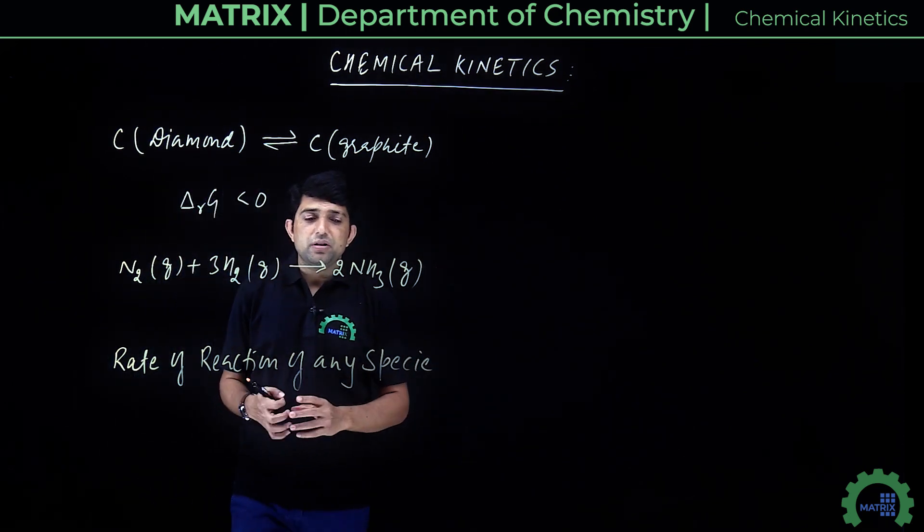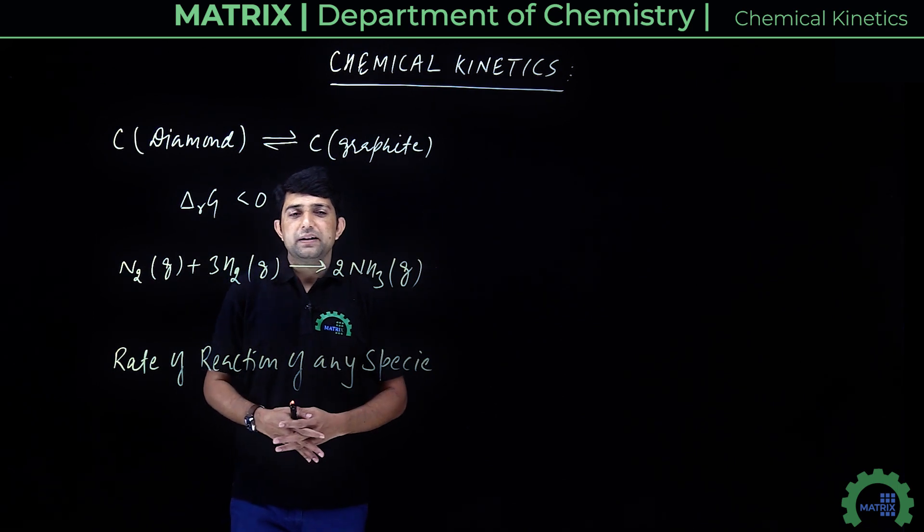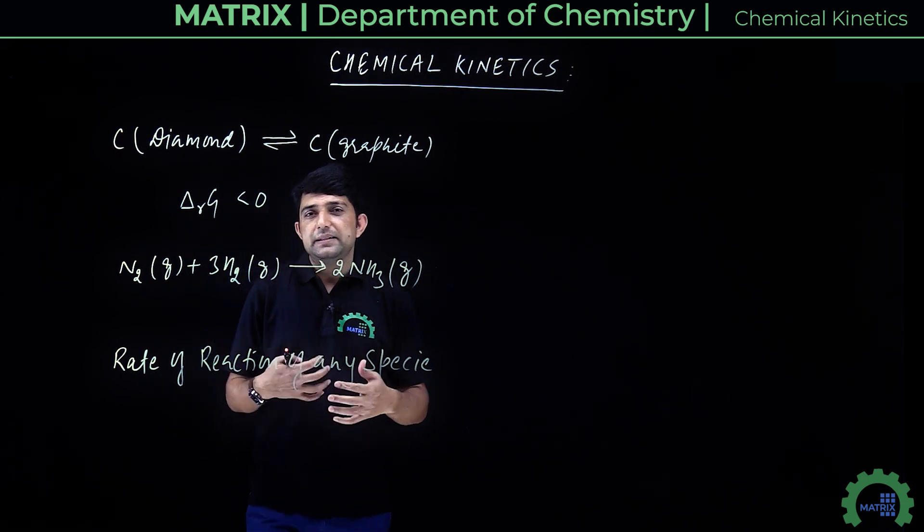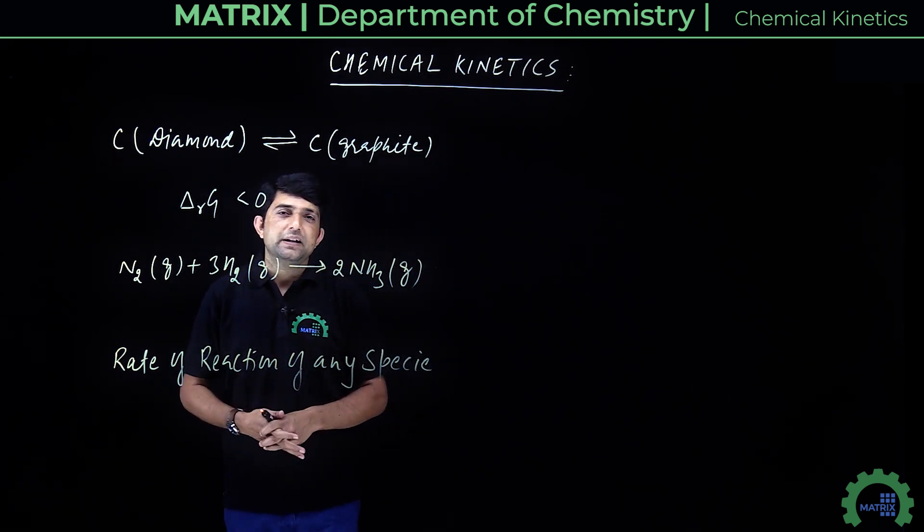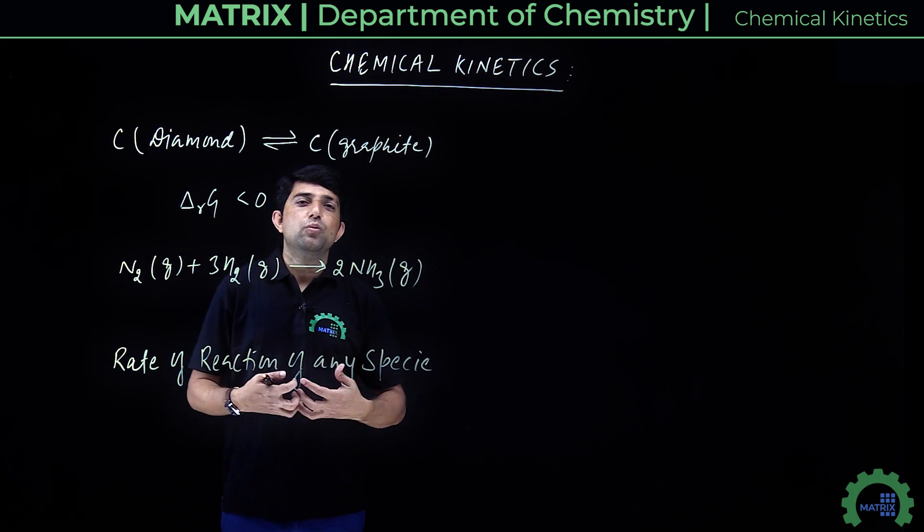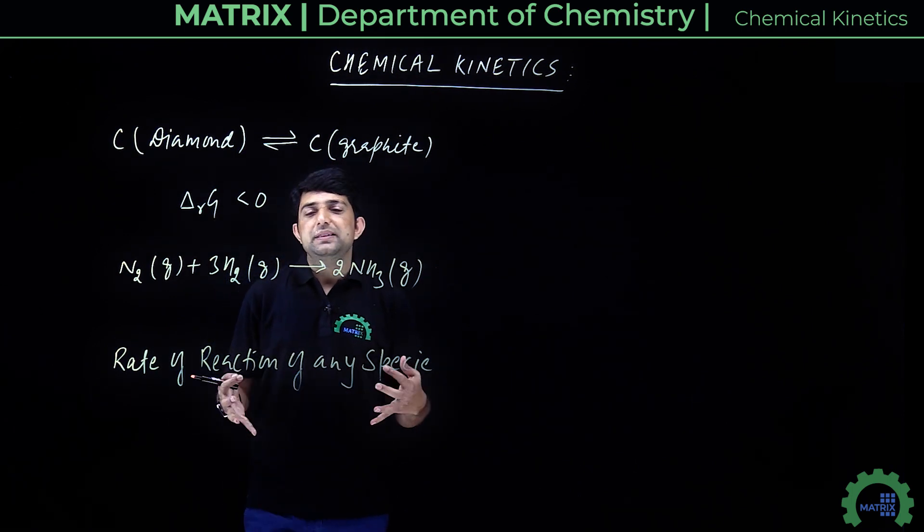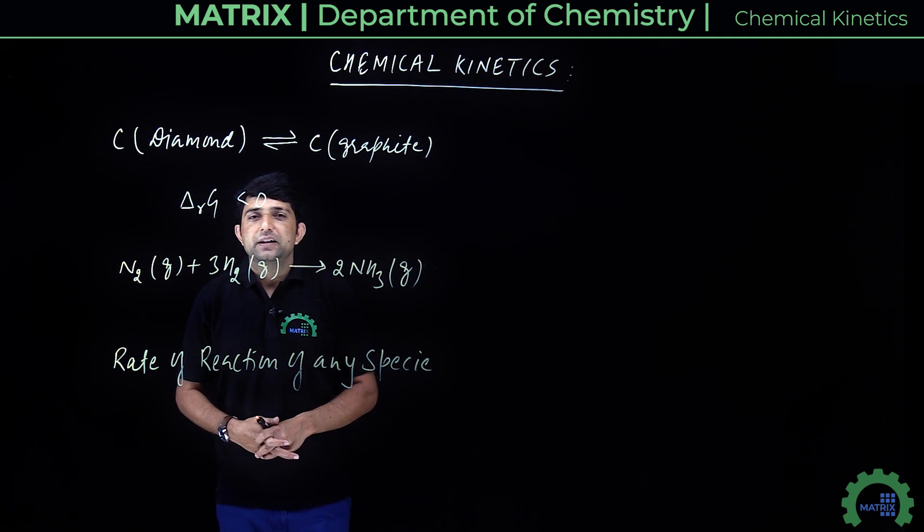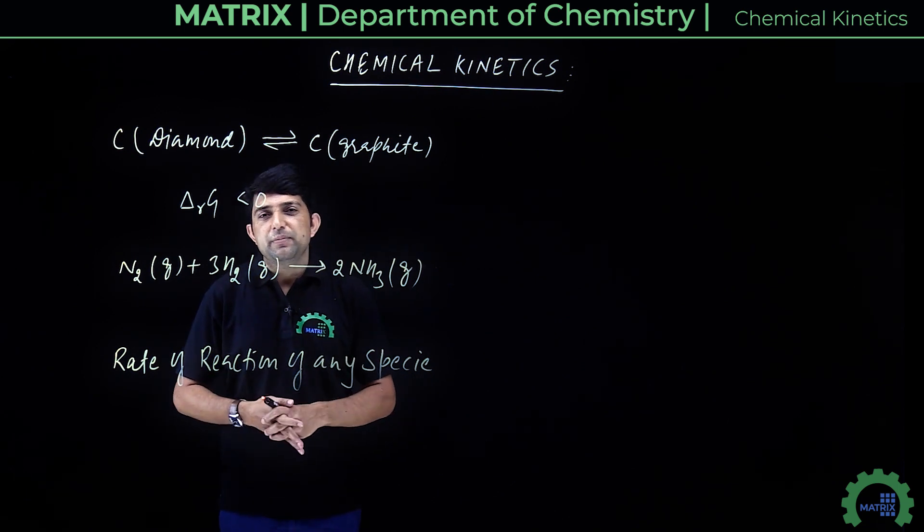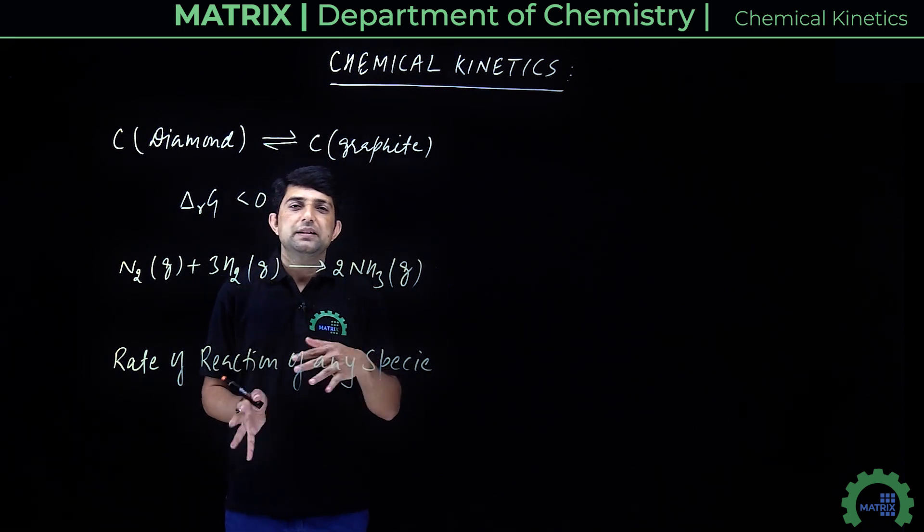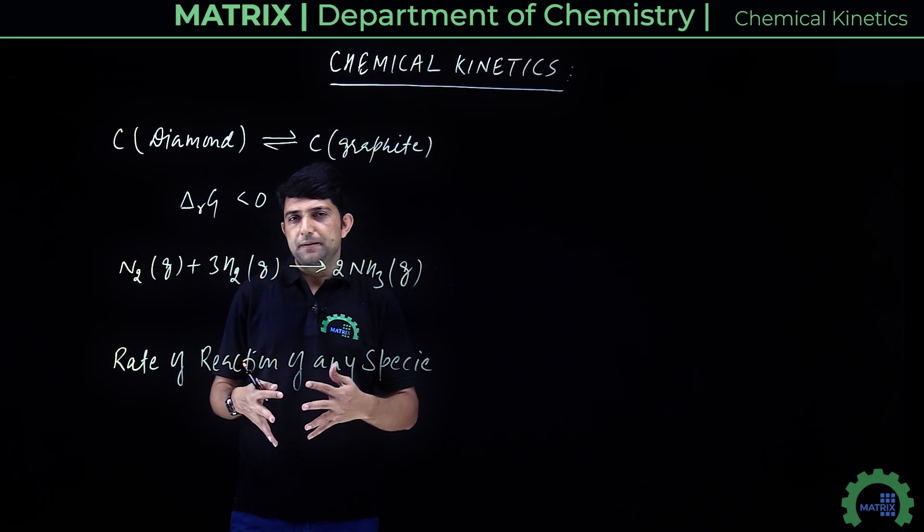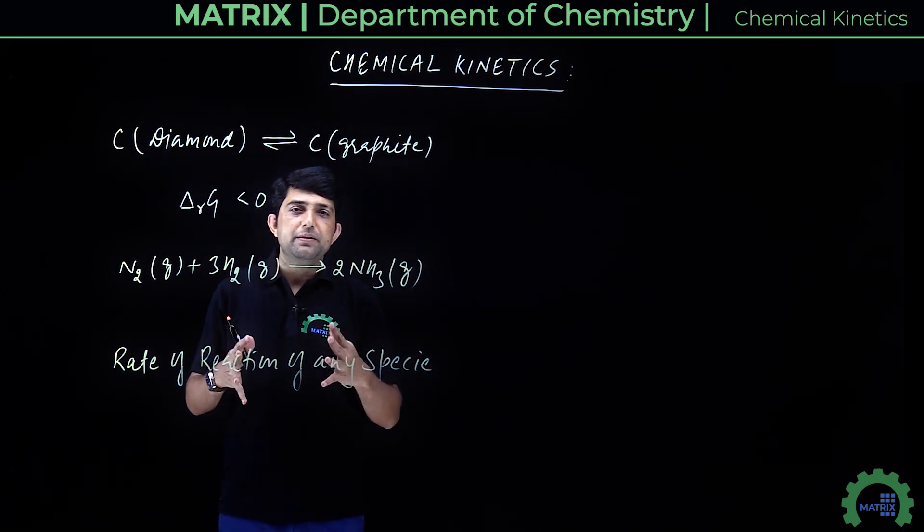An important point is that we are going to read the rate of reaction of any species. If we know by some method what the rate of ammonia formation is, then we can easily find out how much time it takes to form 2 moles, 5 moles, or any given amount of ammonia.